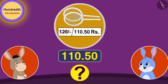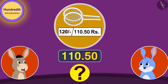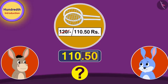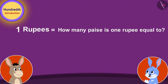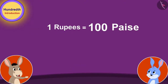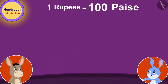Bhoola asked Bunny: how will we give 0.50 rupees? Bunny laughed and said: how many paise is one rupee equal to? One hundred paise! Bhoola replied quickly. Bunny said: exactly!